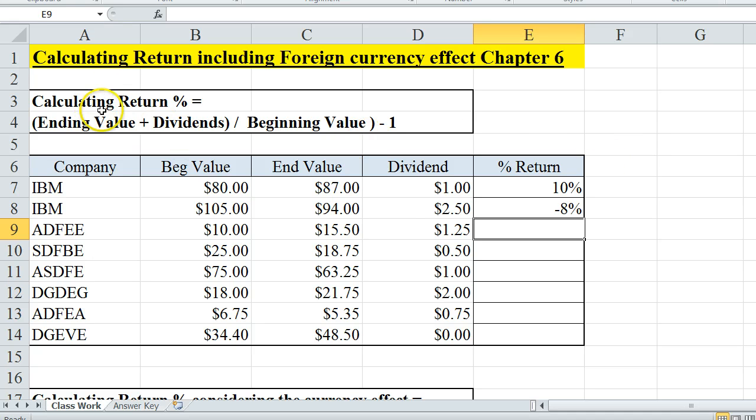So the first part of the handout, we're going to just calculate the return percentage. In order to do that, I'm going to take my formula here and I'm going to add my ending value plus my dividends, and I'm going to divide that by my beginning value. So that is not the full formula. I'm also going to have to subtract 1 to get it into a percentage format.